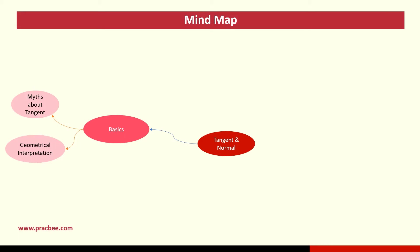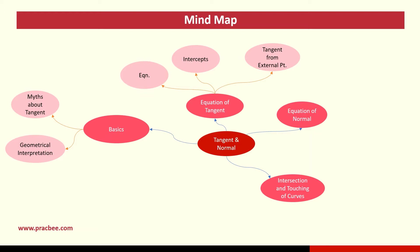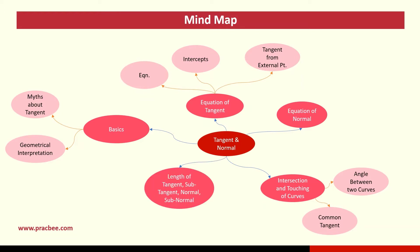We start tangents and normals with a discussion on basics. First is the geometrical interpretation — how a derivative is linked to tangents, and what are the myths about tangents. Then we move to the equation of tangents: how to write it as a standard, if intercepted by an axis, or from an external point. Next, we discuss the equation of normals, and then if two curves intersect or touch, how we find the angle and write the common tangent equation.